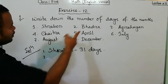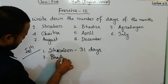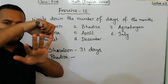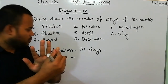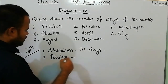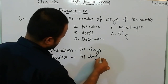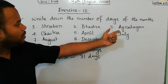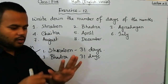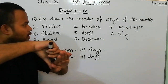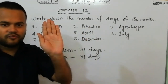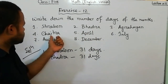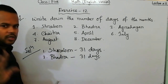For Bhadra: Bhadra is the fifth month, so Bhadra also has 31 days. For Agrahayan and Chaitra: these two months are not among the first five months of the Bangla calendar, so they each consist of 30 days. Agrahayan has 30 days and Chaitra also has 30 days.